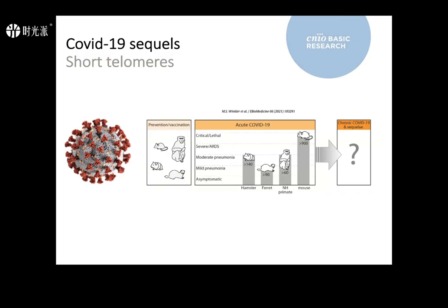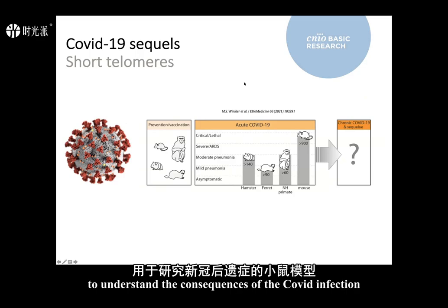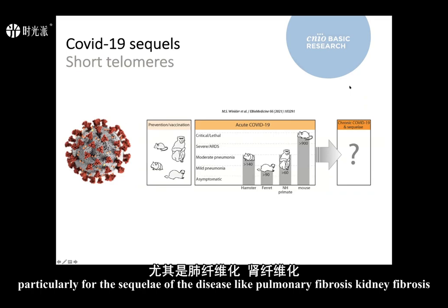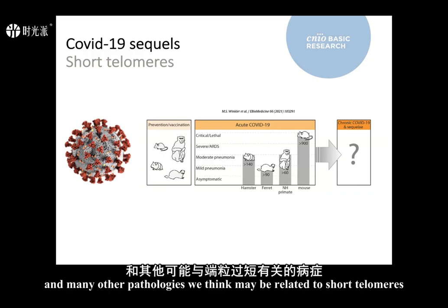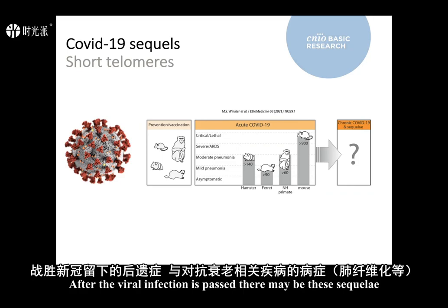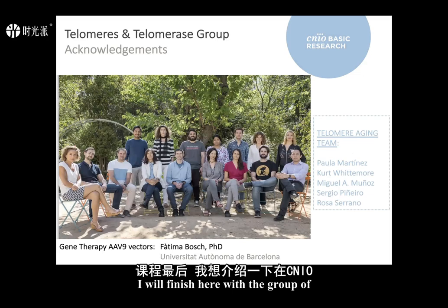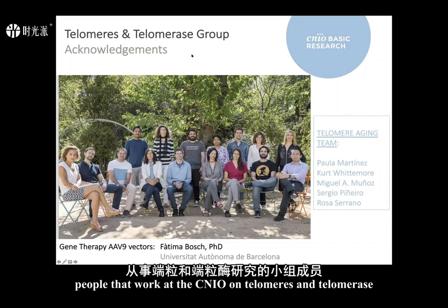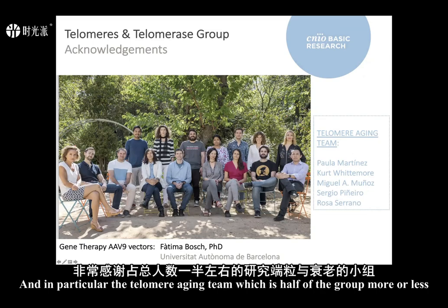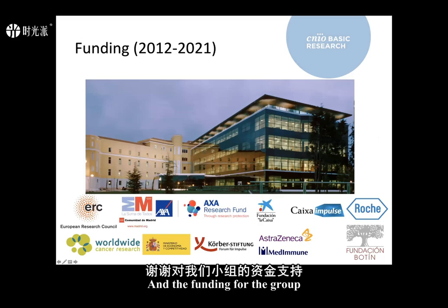We are developing mouse models to understand the consequences of COVID-19 infection, particularly the sequelae such as pulmonary fibrosis and kidney fibrosis. We think these sequelae may be related to short telomeres — after the viral infection passes, aging-associated diseases like pulmonary fibrosis may arise. I will finish by thanking the group at CNIO working on telomeres and telomerase, particularly the telomerase team, as well as our funders.